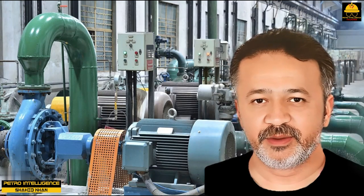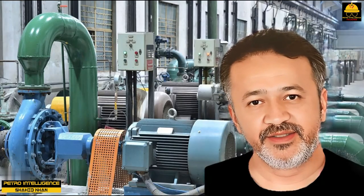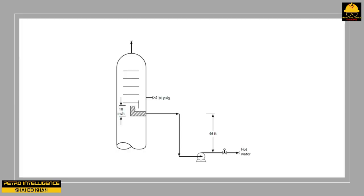Pumps cavitate for three reasons: insufficient available NPSH to satisfy the conversion of pressure to velocity in the eye of the impeller (running NPSH); insufficient available NPSH for the conversion of pressure to acceleration in the suction line during startup (starting NPSH); and the most common reason in the author's experience — partial plugging of draw nozzles. This is illustrated by a side draw-off from a fractionator, where slowly opening the discharge control valve increases flow up to a point, beyond which discharge pressure and flow become erratically low, indicating cavitation.